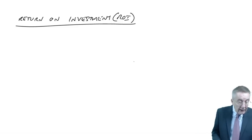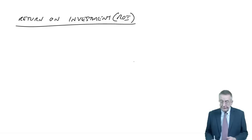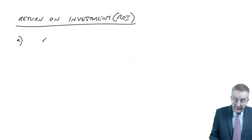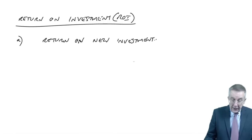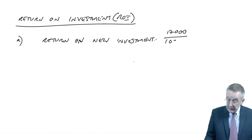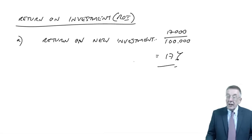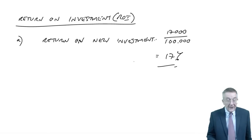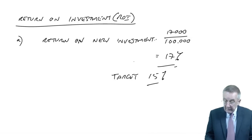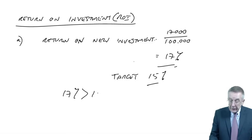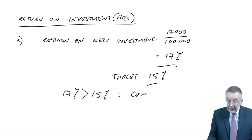First, is the new investment attractive to the company as a whole? The new investment is generating £17,000 a year on an investment of £100,000, giving a return of 17%. Our target is 15%, so it's more than the target — no argument. The company wants to accept.